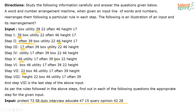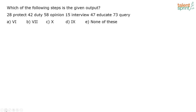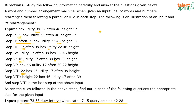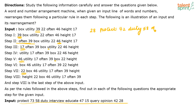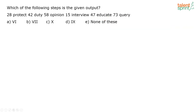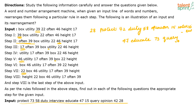Now, as per the rules followed in the above steps, we need to find out the appropriate step for the given input. They have given a particular input. The question asks: which step is the given output? The given output is: 28 protect 42 duty 58 opinion 15 interview 47 educate 73 query. We need to identify at which step this output occurs.